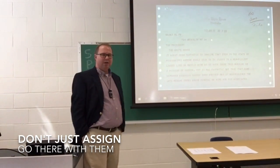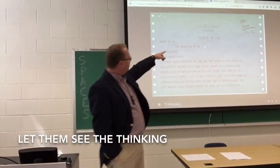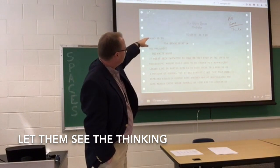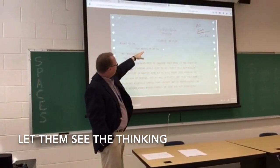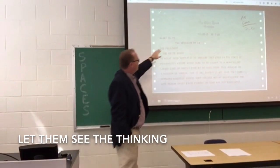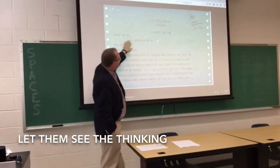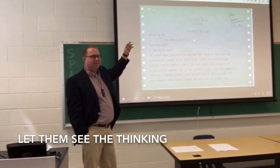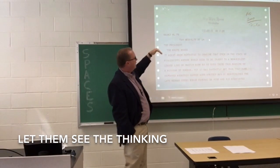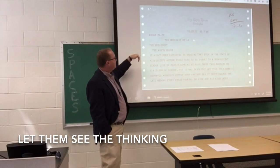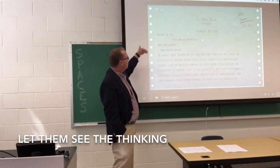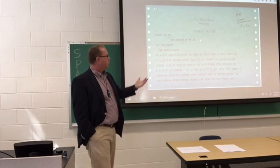First of all, we notice the date. We notice that this telegram is going to the White House. The date is June 15th, 1963, and it's coming from Brooklyn, New York. I always want to look at the title and the date because it contextualizes the document. This telegram is sent to the President of the United States — obviously the President is in the White House. I'm going to read through part of it.